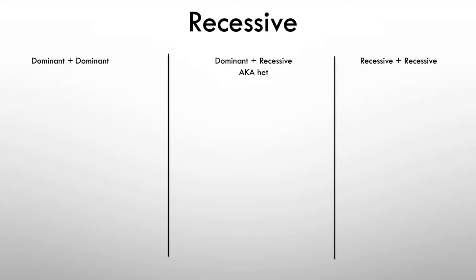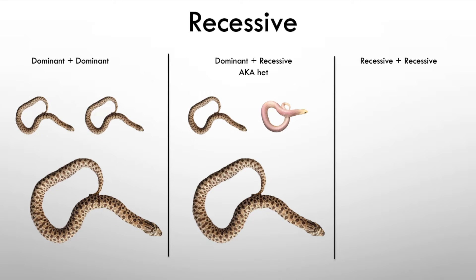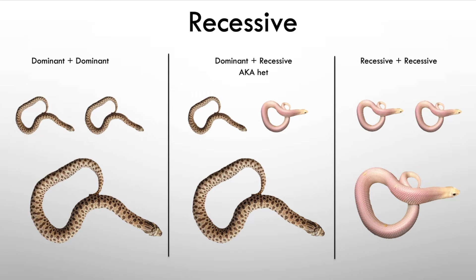Before the Punnett squares, let's review the chart. Dominant plus dominant gives a normal-looking snake. Dominant plus recessive — using the leucistic gene as our example — gives a normal-looking animal because the recessive only has one copy. Recessive plus recessive gives you a visual. The middle combination — dominant and recessive — is the term you see called 'het' or heterozygous, meaning it only has one copy. When an animal is het for leucistic or albino, you can't visually see it, but it carries that one copy of the recessive gene.